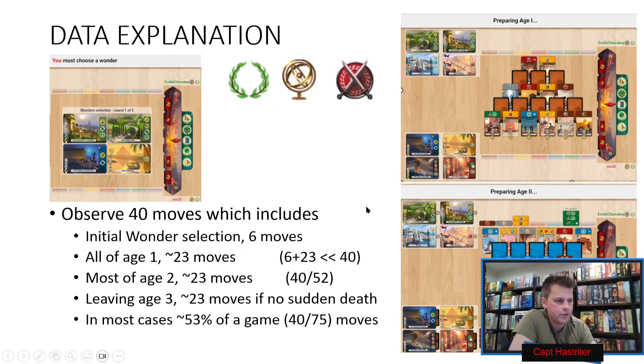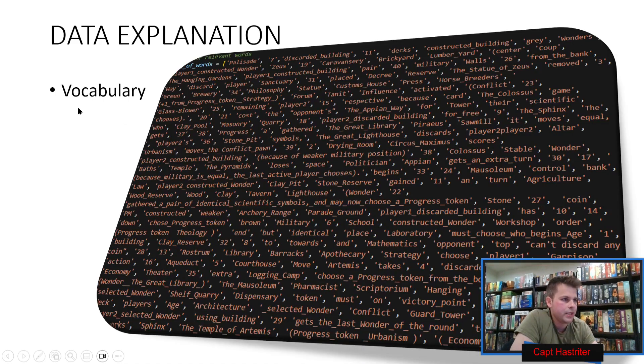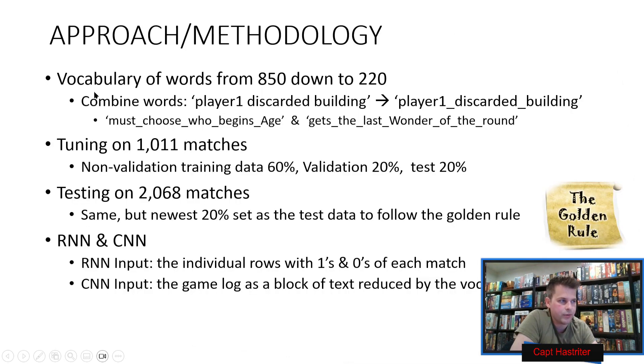We chunked it off at just 40 moves, which takes us about 53% of the way through a game. We ended up with a cool little vocabulary that came out of that, and that will be important for the convolutional neural network later. We took 850 words, brought it down to 220 words.